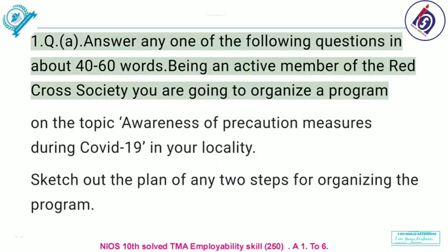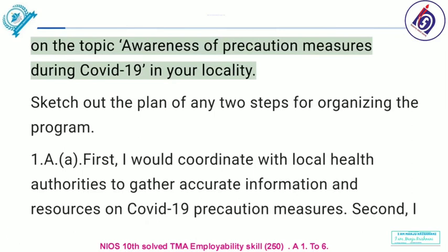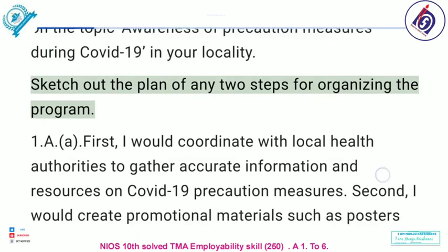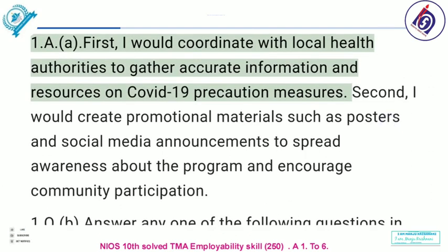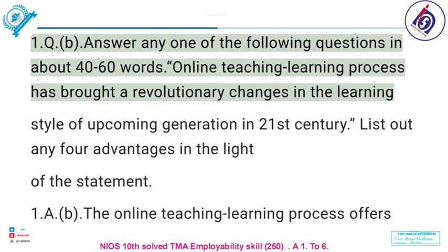Answer any one of the following questions in about 40 to 60 words. Being an active member of the Red Cross Society, you are going to organize a program on the topic 'Awareness of Precaution Measures during COVID-19' in your locality. Sketch out the plan of any two steps. First, I would coordinate with local health authorities to gather accurate information and resources on COVID-19 precaution measures. Second, I would create promotional materials such as posters and social media announcements to spread awareness about the program and encourage community participation.